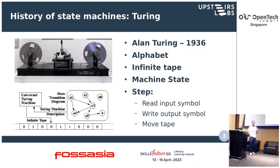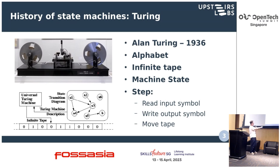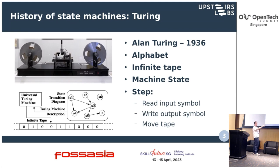For people who are brand new to this theory, essentially you have a machine and you have an alphabet. Here in the example the alphabet contains only one and zero — so it's a two-letter alphabet. The Turing machine essentially has an infinite tape input; it reads one symbol from the alphabet and that causes the state machine to change state, stamping a new symbol on the tape.